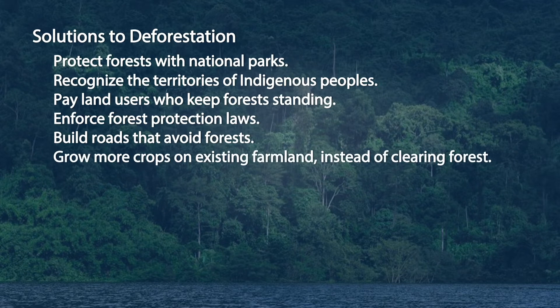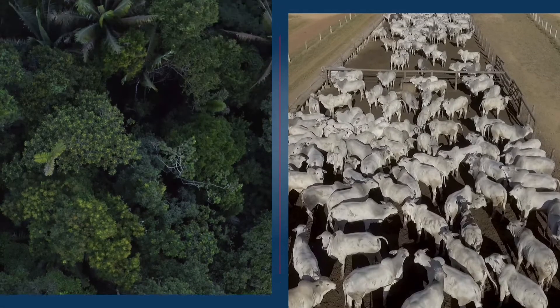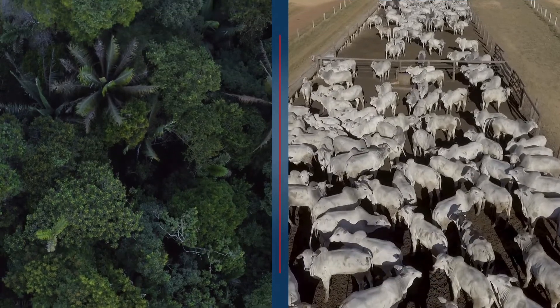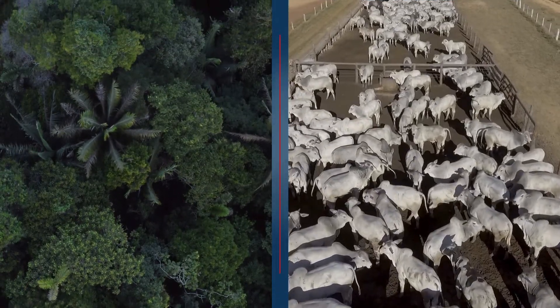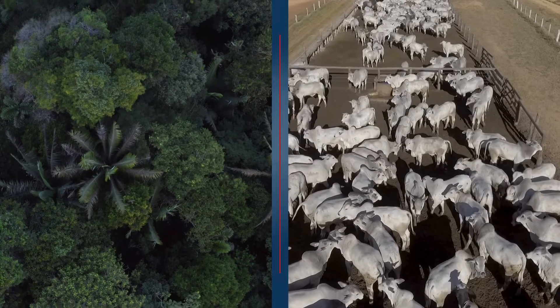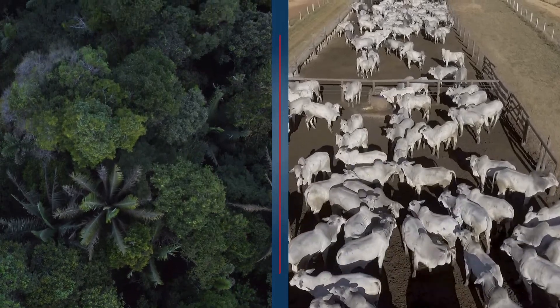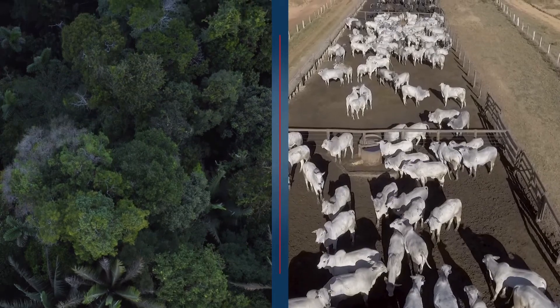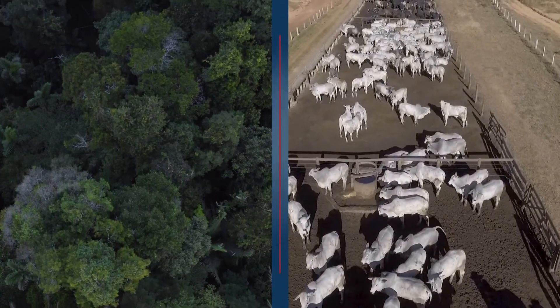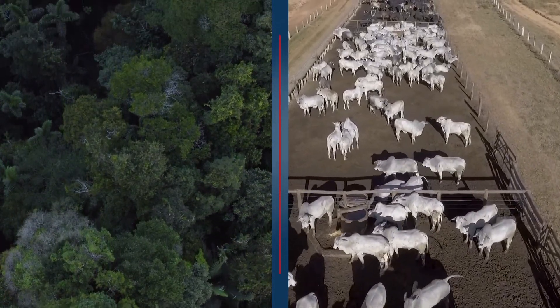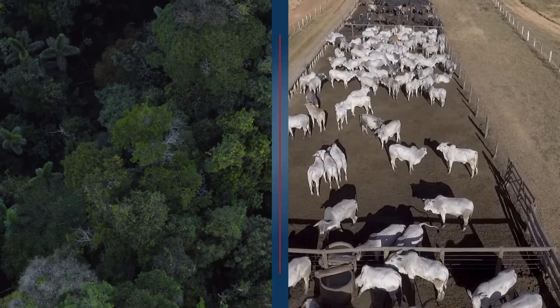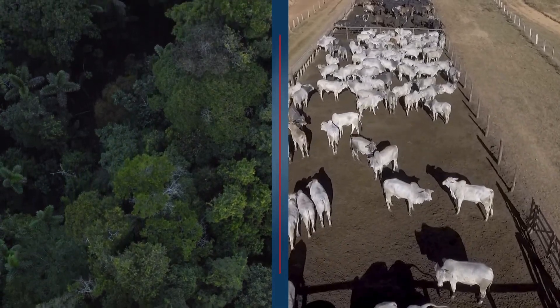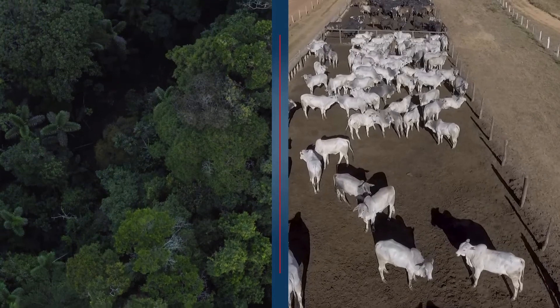Can this be done? It already has. The best example is from Brazil. Between 2004 and 2012, Brazil reduced deforestation in the Amazon by 80%. At the same time, Brazil's soy and beef production went up. "If anyone figured out how to cut their country's fossil fuel emissions by 80% in under a decade, with so little impact on the economy, they'd win a Nobel Prize," writes Bush.